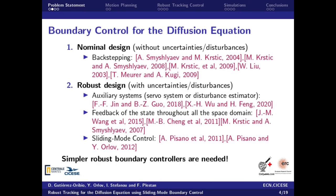Roughly speaking, we could divide the boundary control results for the diffusion equation into two types. A nominal design, where there are no uncertainties or disturbances present in the system.